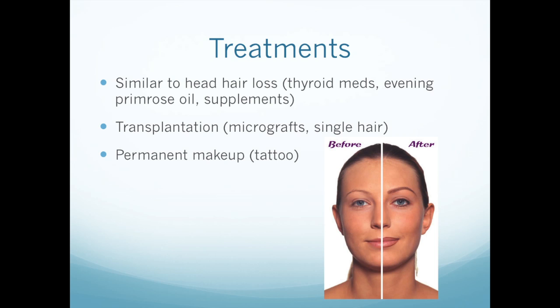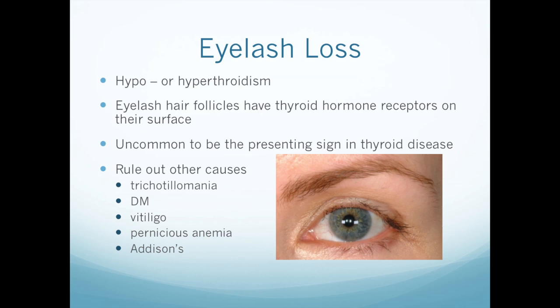The final topic is eyelash loss. This can occur in hypo or hyperthyroidism. The eyelash hair follicles actually have thyroid hormone receptors on their surfaces, which is why they are affected by thyroid imbalances. It's really uncommon for this to be the presenting sign of thyroid disease — more often it's somebody with known thyroid imbalance who notices this secondarily. If you just notice thinning eyelashes, these other causes are much more likely: the primary one being trichotillomania, diabetes, vitiligo, pernicious anemia, and Addison's.